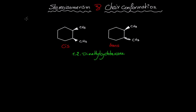we have the cis and the trans. If we take the example of 1,2-dimethylcyclohexane, we can see that the two methyls could be facing the same side — this is the cis conformation — or they could be facing opposite sides, which is the trans conformation or trans stereoisomer.